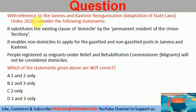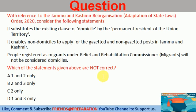Question. With reference to the J&K Reorganization Order 2020, consider the following statements. Statement 1: It substitutes the existing clause of domicile by the permanent residence of the Union Territory. Statement 2: It enables non-domiciles to apply for gazetted and non-gazetted posts in J&K. Statement 3: People registered as migrants under the Rehabilitation Commission will not be considered domiciles. Which of the statements given above are not correct?